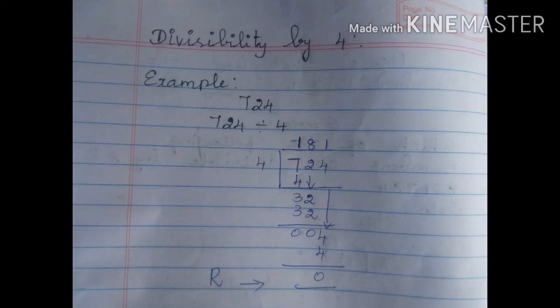Next, bring down 2. 8 fours are 32. Subtract: 32 minus 32 is 0. Bring down 4. 1 four is 4, so 4 minus 4 is 0. Remainder value is 0, so the above number is divisible by 4.